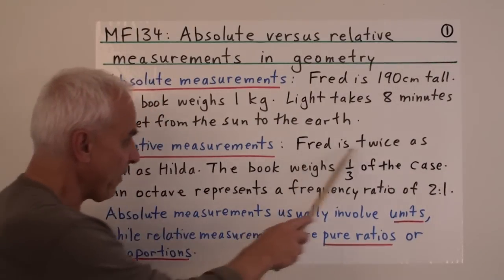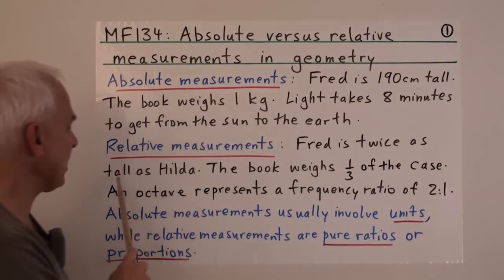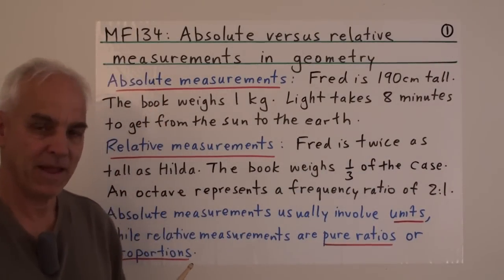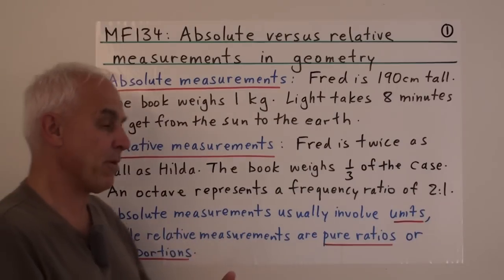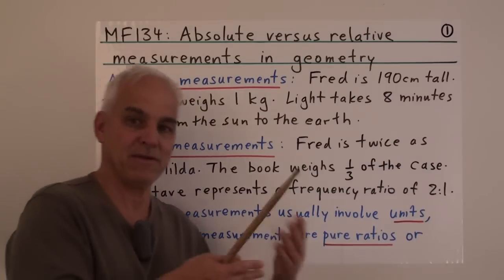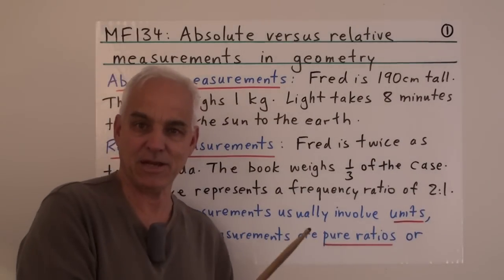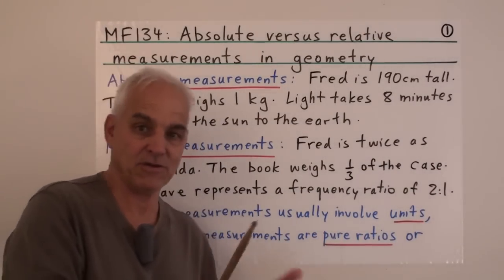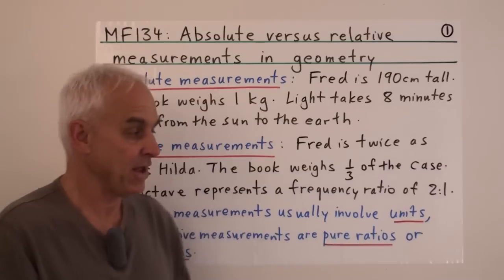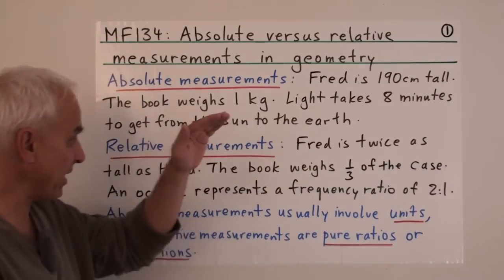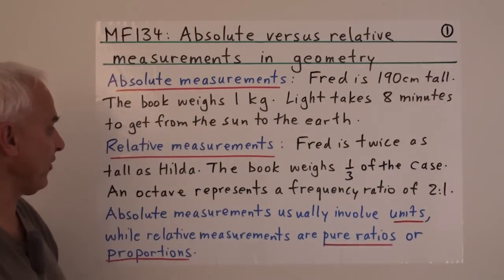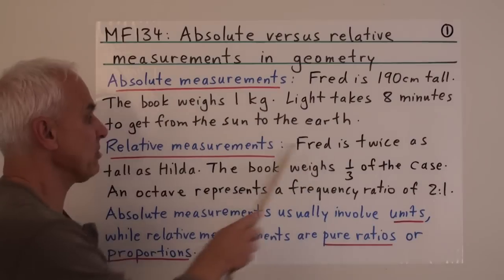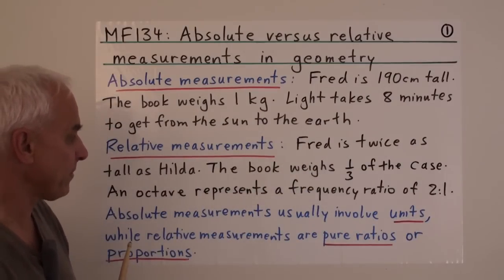In a relative measurement, we're not necessarily invoking any units. For example, 'Fred is twice as tall as Hilda.' This is independent of whether we're measuring in centimeters, inches, feet, meters, or some other system — just the fact that Fred is twice as tall as Hilda. It's a relative measurement comparing Fred with Hilda.